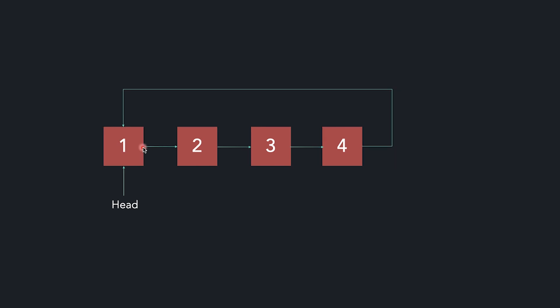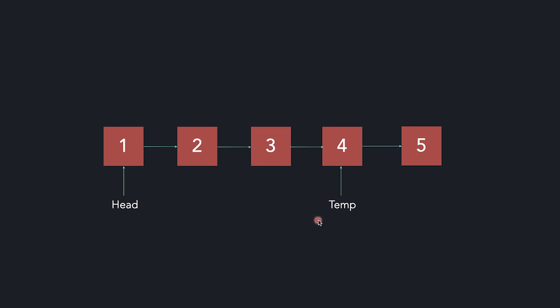First of all, if we want to add a node to the end of a circular linked list, then how do we do that? If I want to add a 5th node, I create that new node. Then I have to traverse to the last node of the current circular linked list, and I'll do that using a temp pointer. Then I will set its next to the new node I have created.